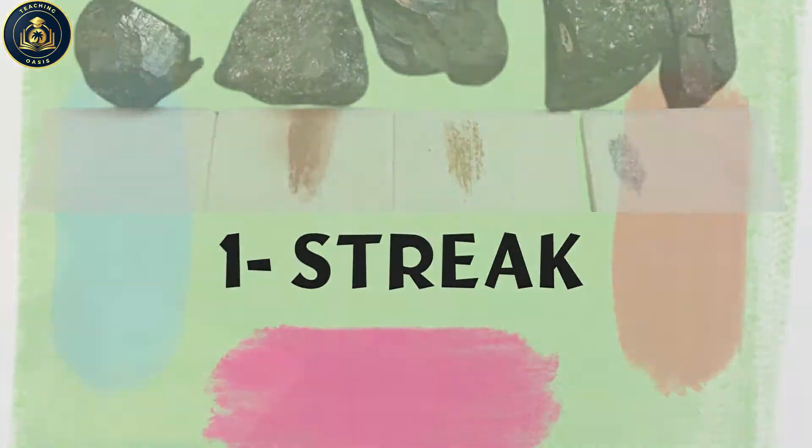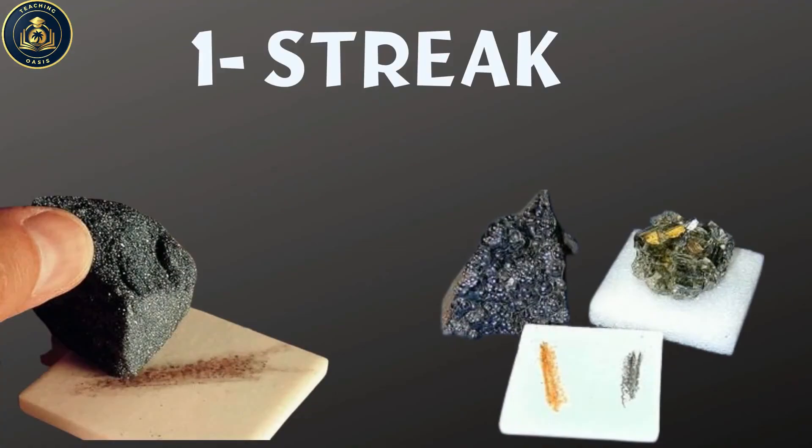Streak: the streak of a mineral is the color of its powder. Although the color of a mineral can vary, its streak does not.